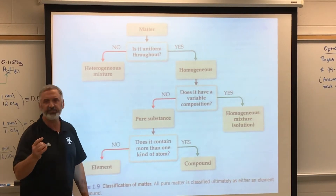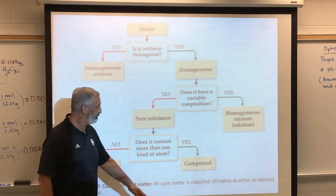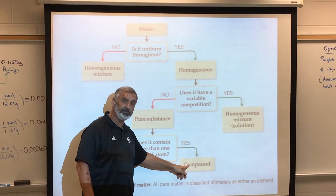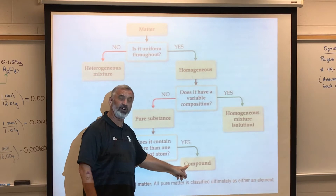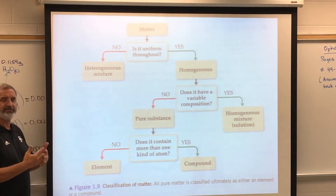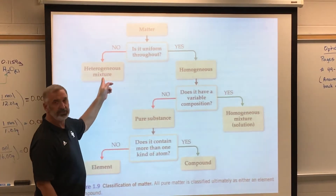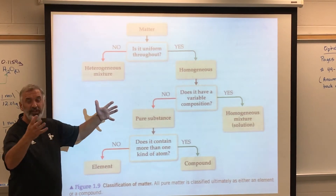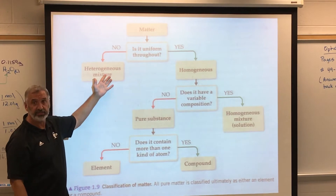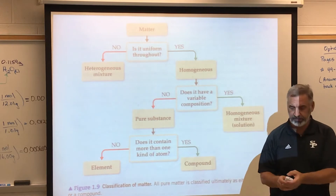Compounds are also pure. Water is composed of hydrogen and oxygen, but they're chemically combined and water has its own unique set of properties. Therefore, you have pure water, pure sugar, pure carbon dioxide. Compounds are pure because they have their own unique set of properties. So our three classes of matter end up being elements, compounds, and mixtures. Everything on earth is either going to be an element, a compound, or a mixture of those two things.